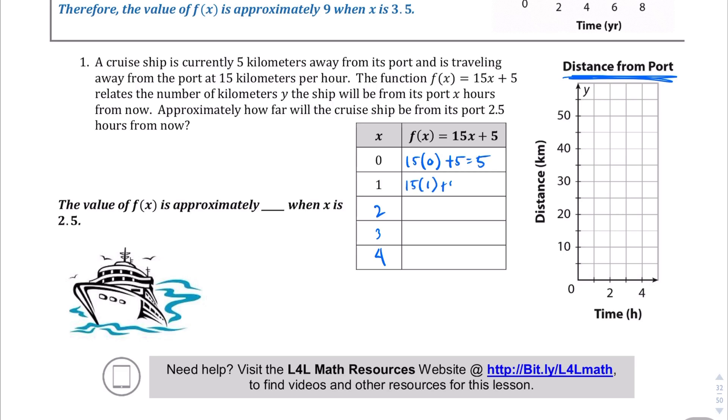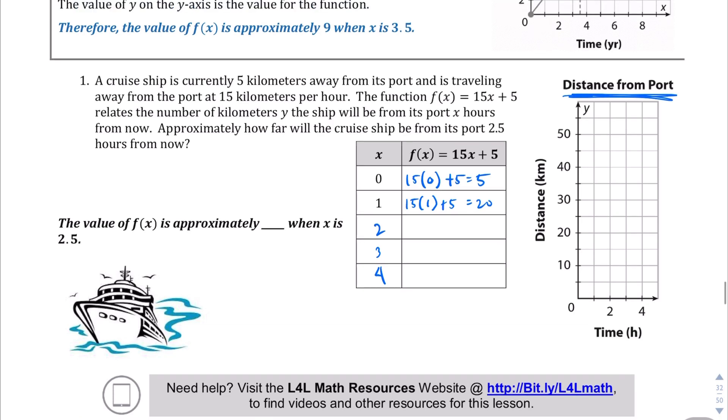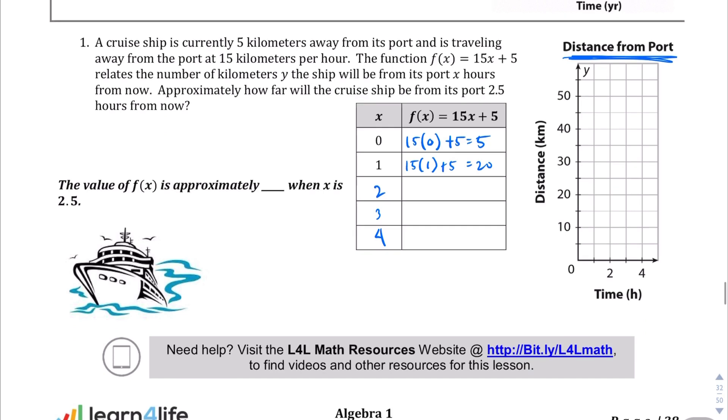Let's plug in two. 15 times two plus five. 15 times two is 30, 30 plus five is 35. Then 15 times three plus five. 15 times three is 45, 45 plus five is 50. And lastly, 15 times four plus five. 15 times four is 60, 60 plus five is 65.